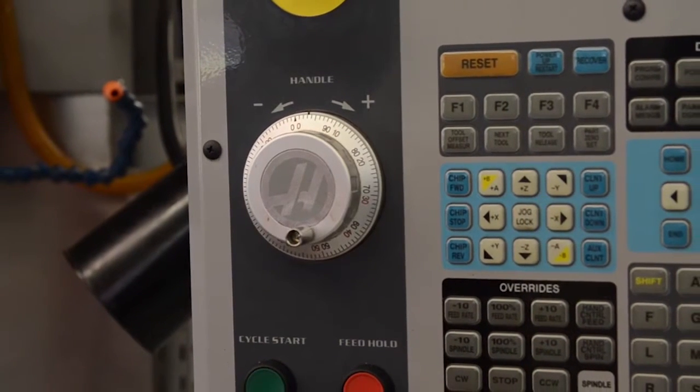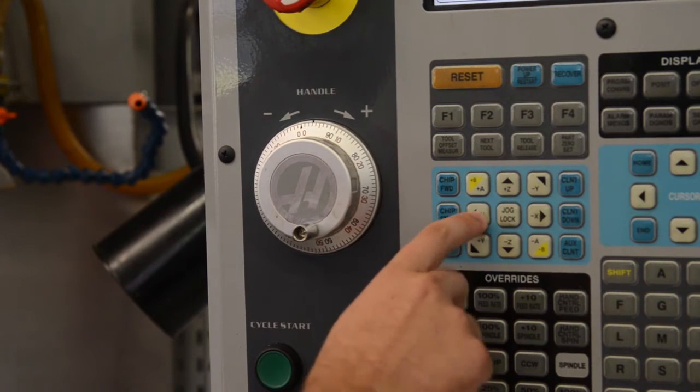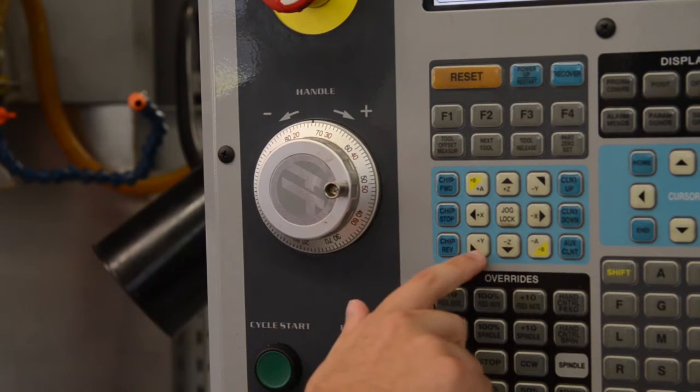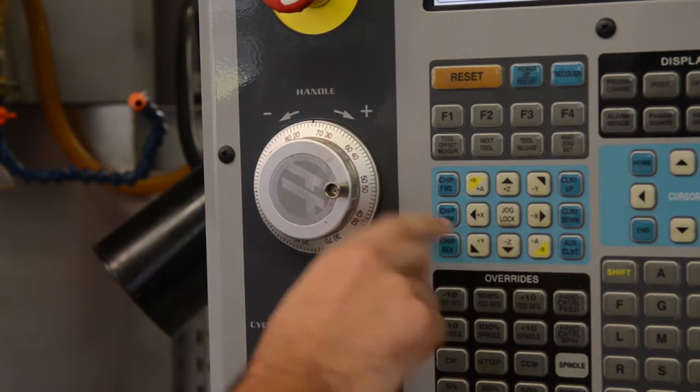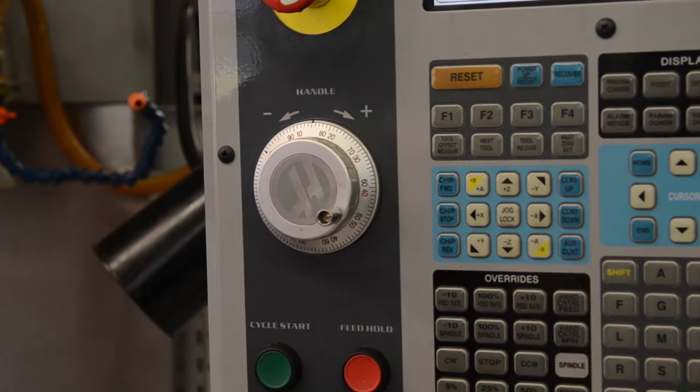It's important to note in the machine home position you can't move in the positive X direction. The machine does not move. Or in the positive Y direction. Again, the machine does not move. Therefore, all of the workspace coordinates relative to the machine home position are negative.